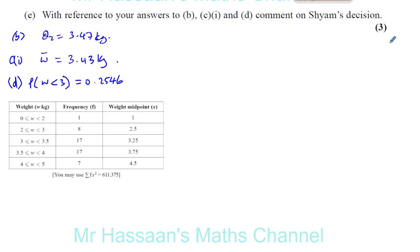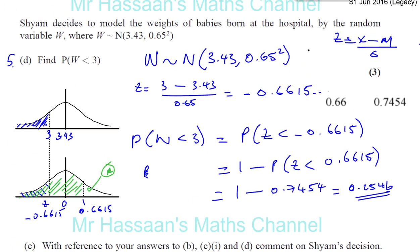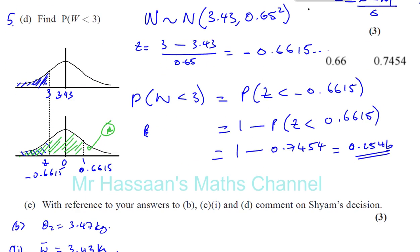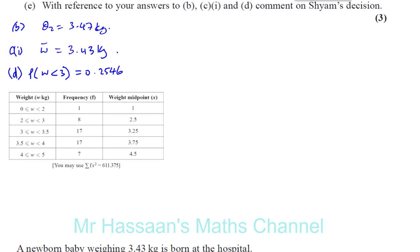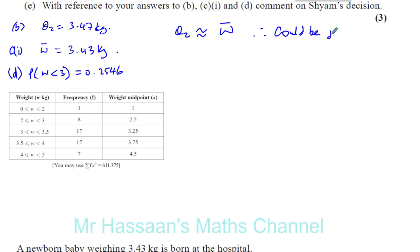Now for part E: with reference to answers from parts B, C part 1, and D, comment on Shyam's decision to model the weights as normally distributed. Looking at parts B and C, Q2 — the median — is quite close to the mean weight, so you could say the decision could be justified.